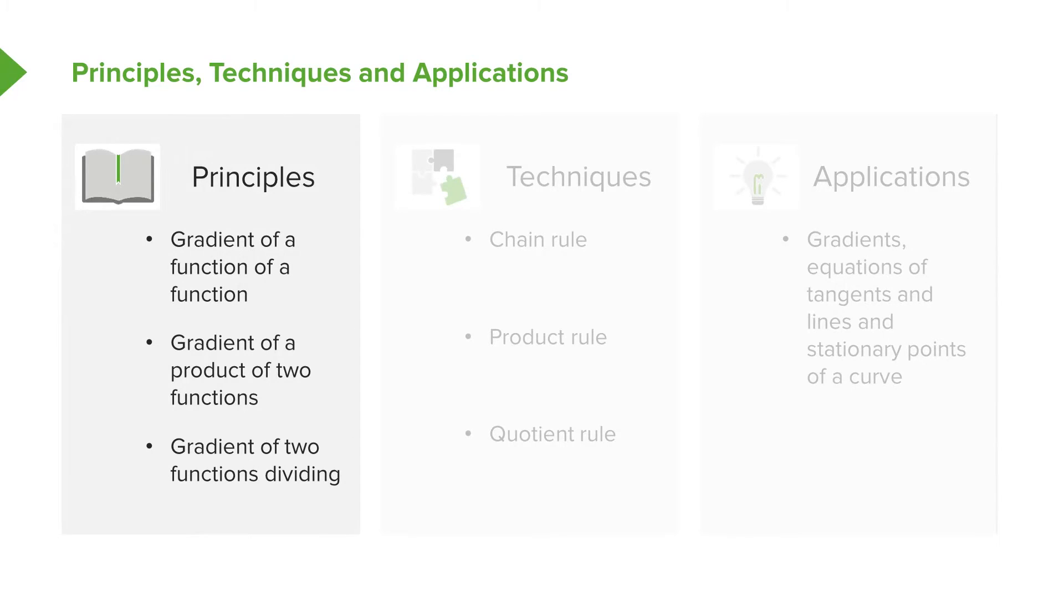The second type of function that we'll be looking at is just a product of two functions. That's fairly straightforward to spot. You just look at two functions that are multiplying together, and then we'll talk about what rule to use to differentiate it.